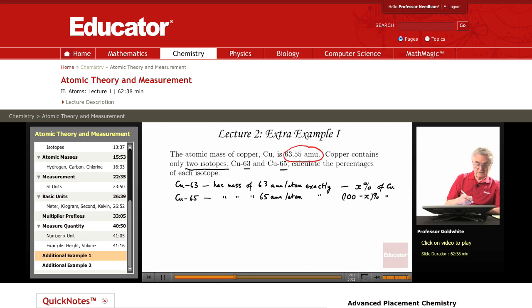That's because there are only two isotopes. If one is present to the extent of x percent, the other must be present to the extent of 100 minus x percent, because their percentages must add up to 100 percent. So now let us calculate the average atomic mass.